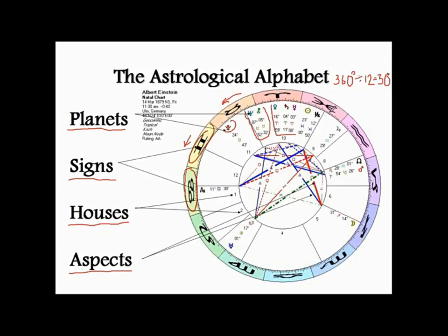For example, here we have Pisces. It will begin over here where Pisces meets Aquarius. So that will be 0 degrees — 5, 10 is about one third of the way through, 15 is halfway through — up until 29, and then begins 0 degrees of the next sign. So it's 0 to 30 with each sign going in this anti-clockwise direction.